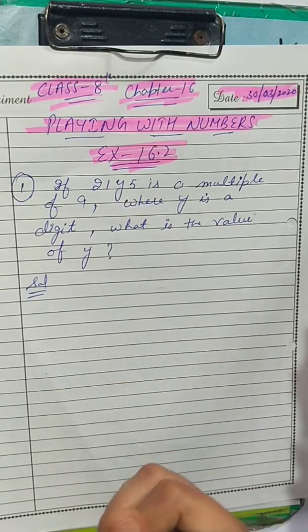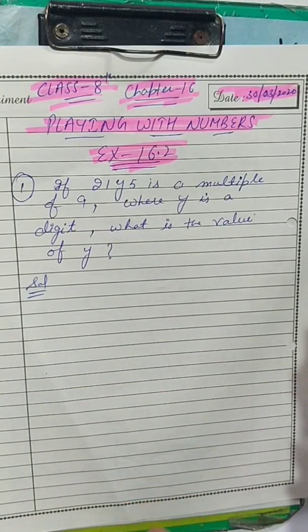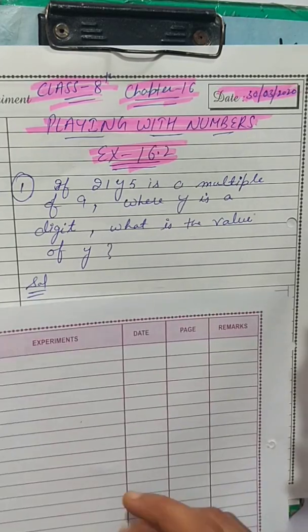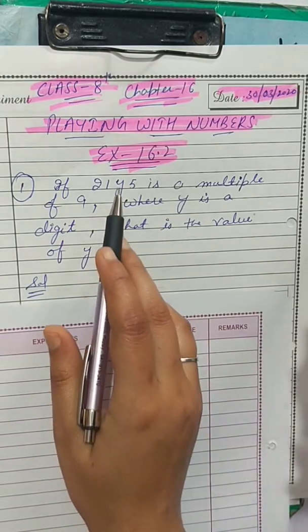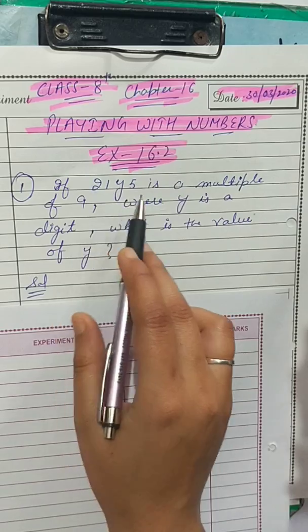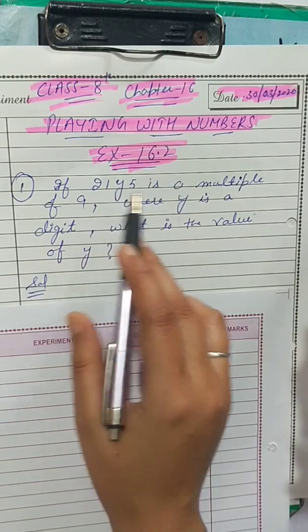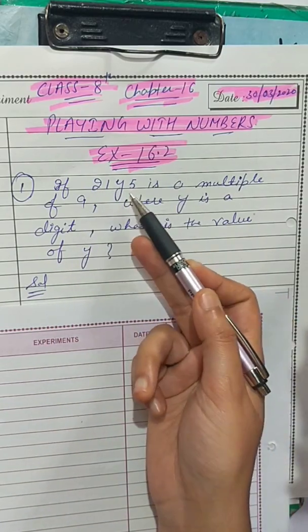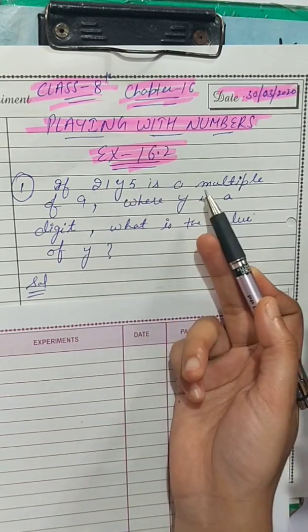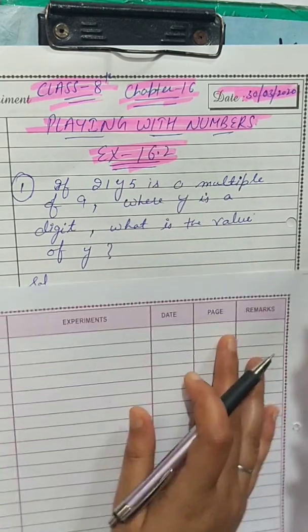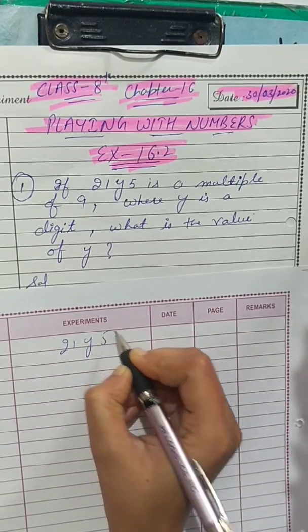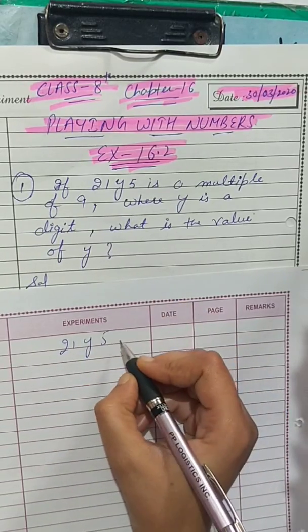First, we have the divisibility rule. So if a number is a multiple of 9, we will check it out. Here we have 21y5 and it is a multiple of 9.